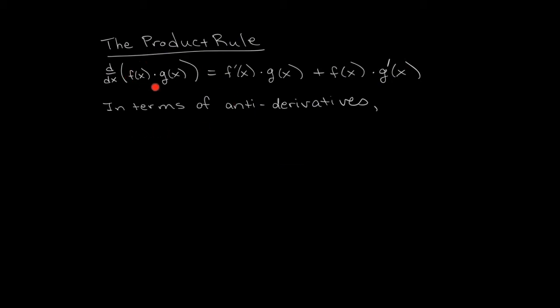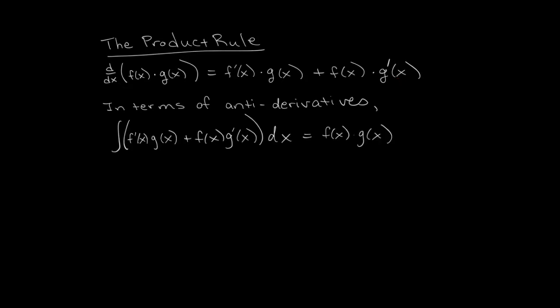If the derivative of f times g is equal to this formula, then the antiderivative of this formula is equal to f times g — don't forget the plus c. Now this is not the most helpful antiderivative formula because the antiderivative would have to look exactly like f prime g plus fg prime in order for us to use it. So we're going to try to move things around and make life a bit easier.